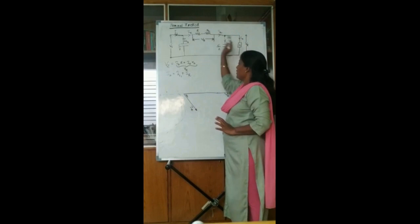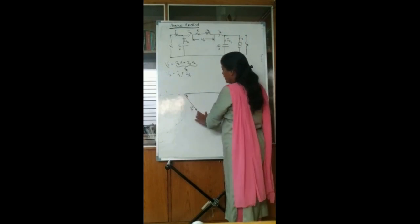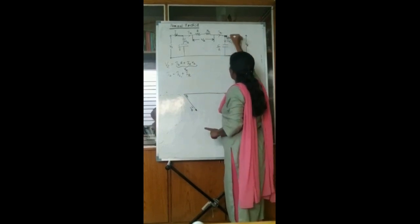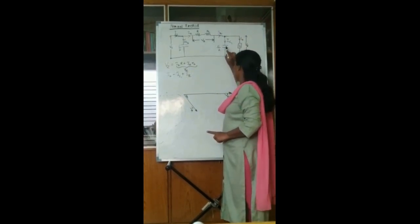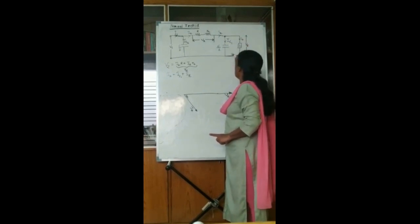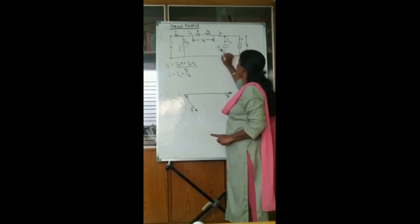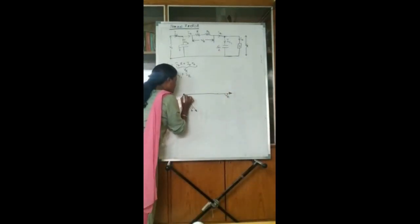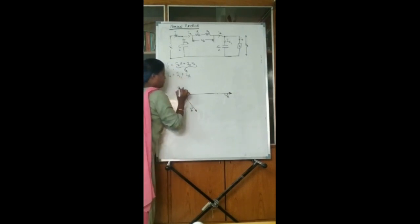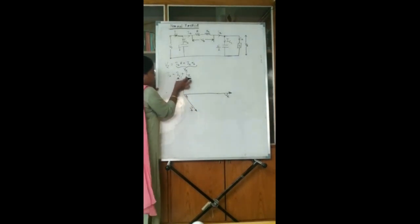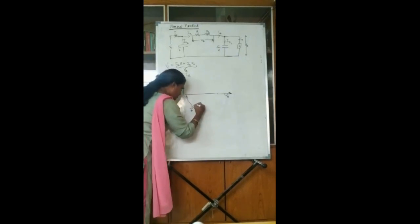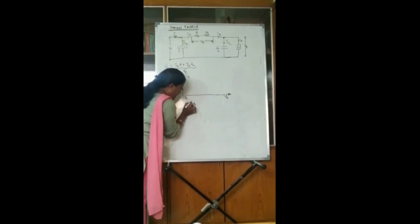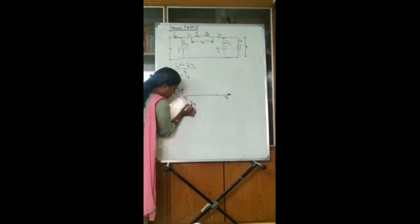Ir is already known. Now, Is1 is the current flowing through the receiving-end capacitance, whose voltage is Vr. Since it is a pure capacitance, current leads voltage by 90 degrees — so Is1 comes exactly 90 degrees ahead of Vr. Once we have Is1 and Ir, these two are added vectorially by constructing a parallelogram to get Iz.